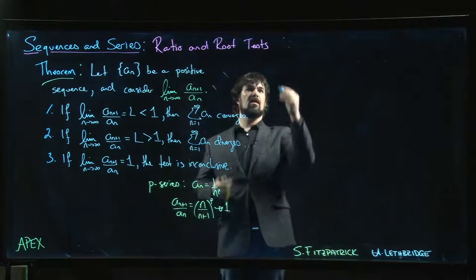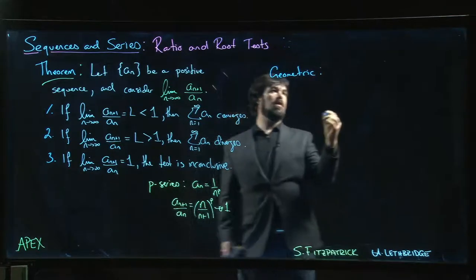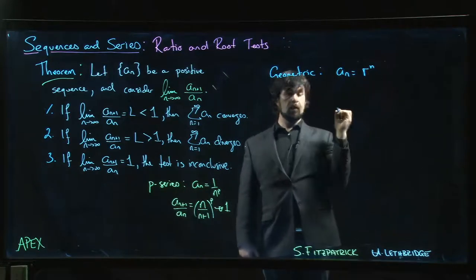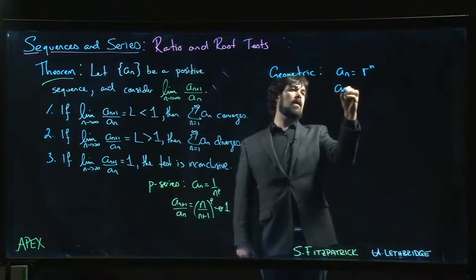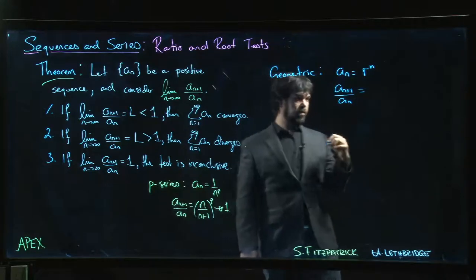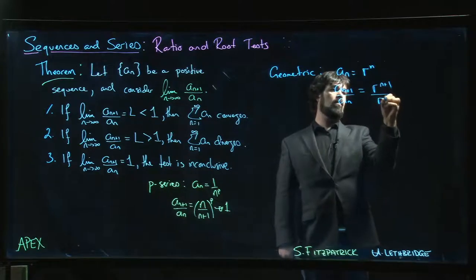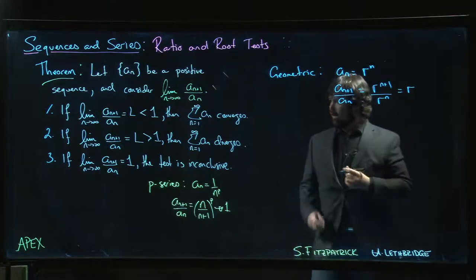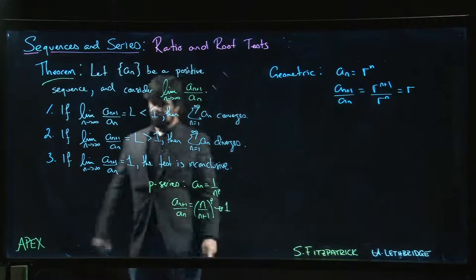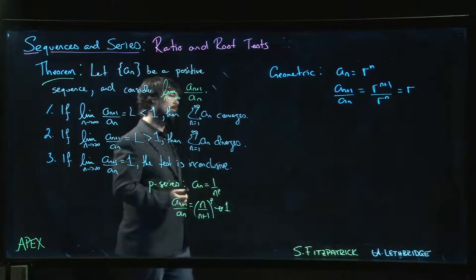In particular, the ratio test definitely takes care of geometric series. Think about a geometric series: if a_n looks like r to the n, well then a_n+1 over a_n is going to be r^(n+1) over r^n, which is r.